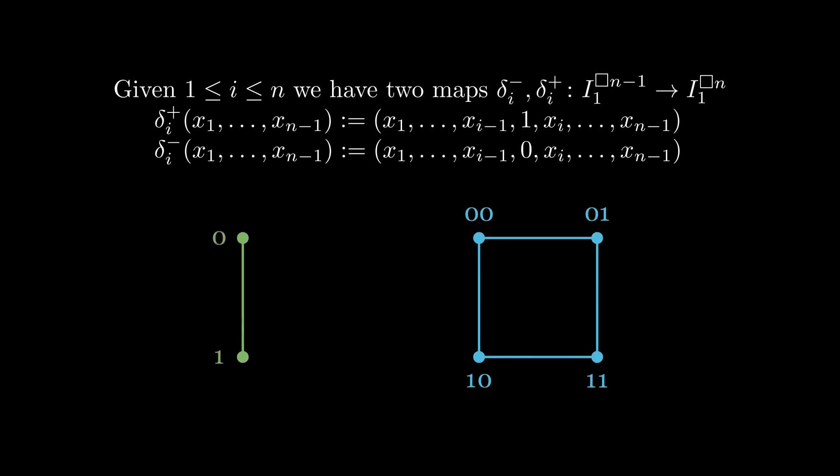So for example, suppose we wanted to compute delta 2-minus from the 1-cube into the 2-cube. What we do is we first insert 0 in the second coordinate, and then take the image under this map. Instead, we could compute delta 1-plus, in which we insert 1 into the first coordinate, and then take the image under this map.